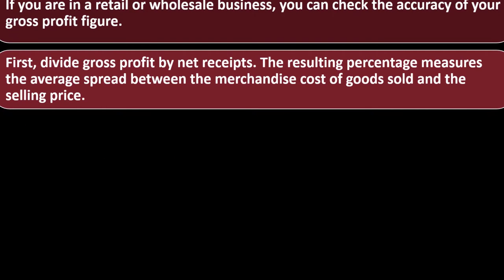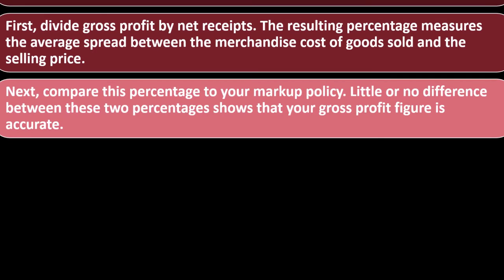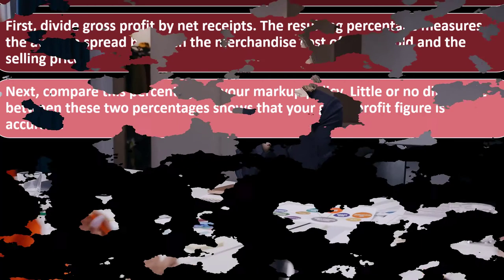First, divide gross profit by net receipts. The resulting percentage measures the average spread between the merchandise cost of goods sold and the selling price. Next, compare this percent to your markup policy. Little or no difference between these two percentages shows that your gross profit figure is accurate.